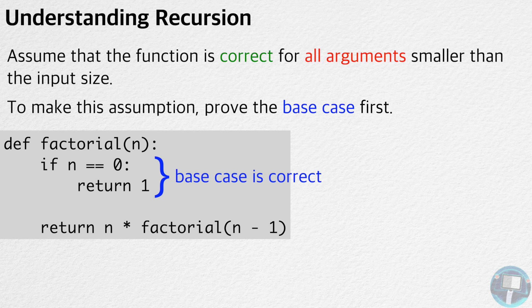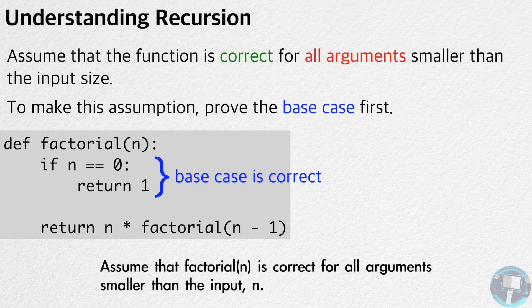Now, we can make the assumption that the factorial function is correct for all numbers smaller than the input, n. By this assumption, factorial of n minus 1 correctly returns the n minus 1 factorial.